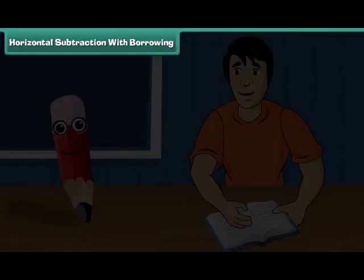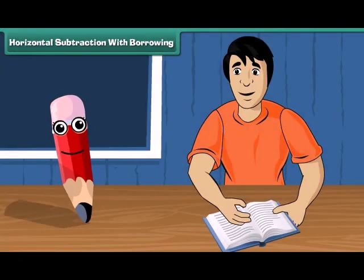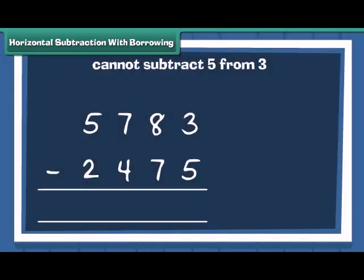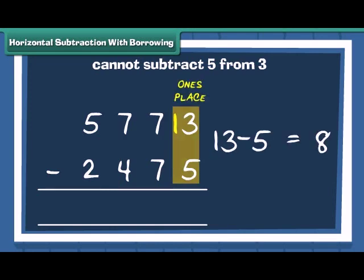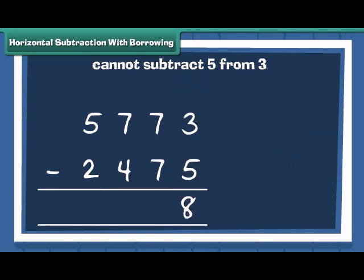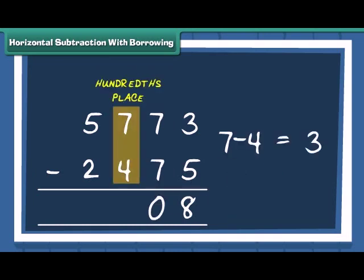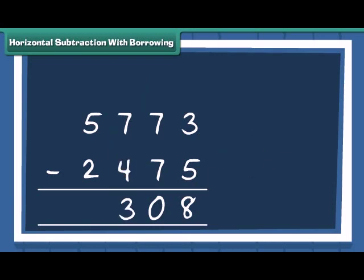Mac, how will we solve this question? It's simple. We start subtraction of numbers at ones place. Note that you cannot subtract 5 from 3. So, you will borrow 10 from 8 to make 13 and 13 minus 5 is equal to 8. Subtract the tens to get 0. At hundreds place, 7 minus 4 is 3. Finally, subtract the thousands to get 3. Was it not easy?